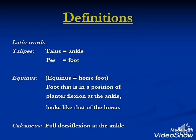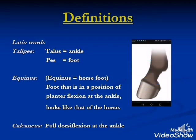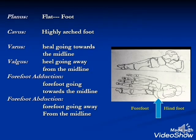Definitions from Latin words: Talipes comes from talus (ankle) and pes (foot). Equinus means horse foot — the foot is in a position of plantar flexion at the ankle, resembling a horse. Calcaneus means full dorsiflexion at the ankle. Planus means flat foot. Cavus means high arch foot. Varus means the heel going towards the midline. Valgus means the heel going away from the midline. Forefoot adduction means the forefoot going towards the midline; abduction means going away from the midline.